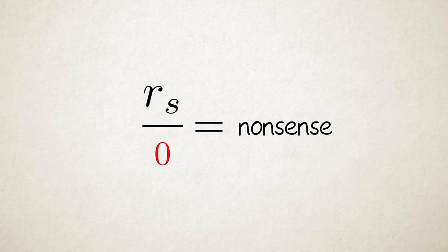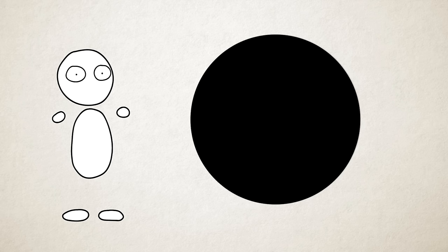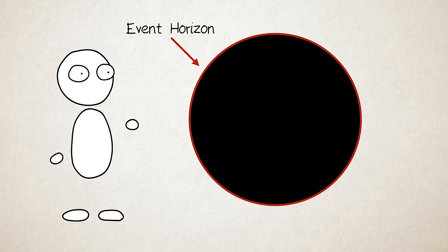An imaginary point in space-time where all the laws we know don't make any sense. Now, let's make something clear. The black hole isn't the singularity. This is the event horizon, sort of a beyond-this-none-shall-return threshold. That's the black hole.